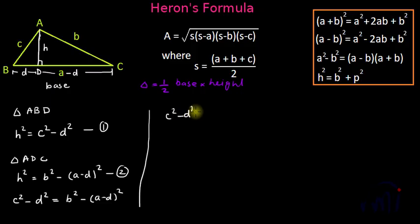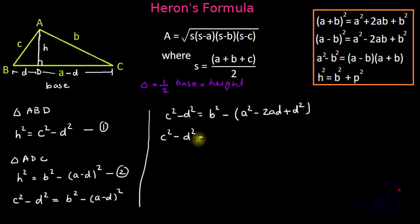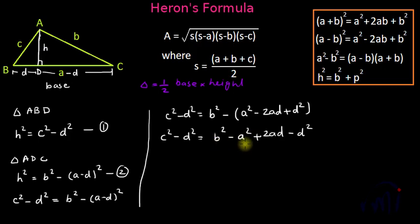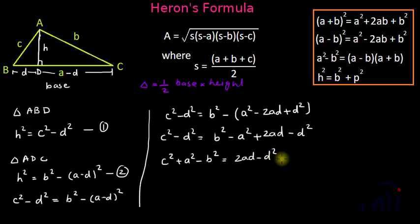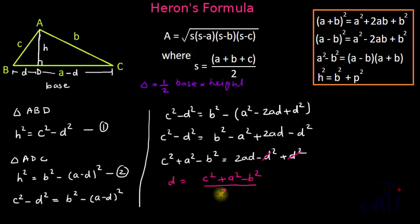Setting the two expressions equal: c² − d² = b² − (a − d)². Expanding (a − d)² as a² − 2ad + d², we get c² − d² = b² − a² + 2ad − d². Shifting terms, c² + a² − b² = 2ad, so d = (c² + a² − b²) / 2a.